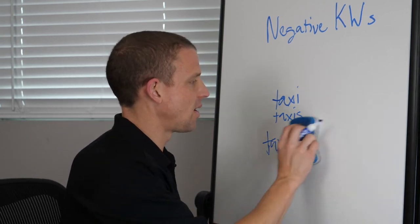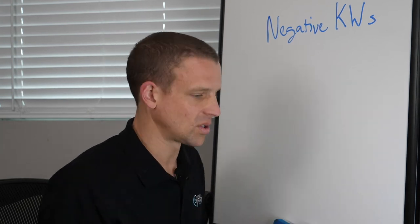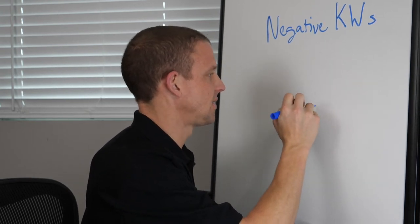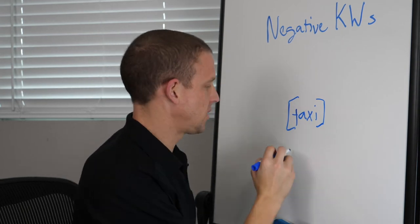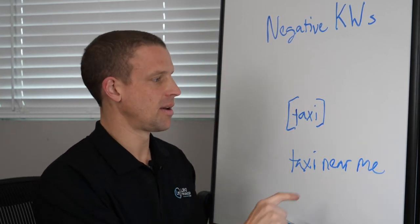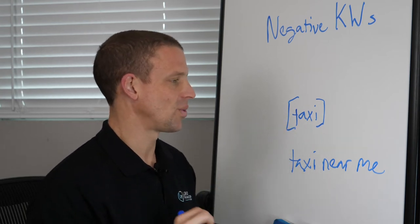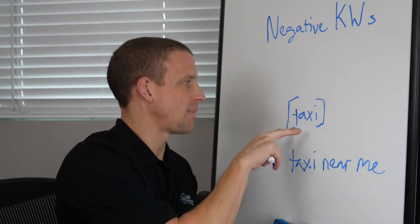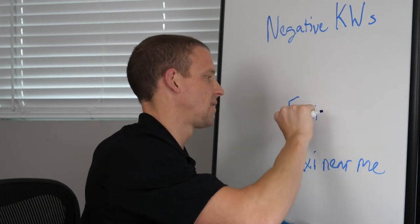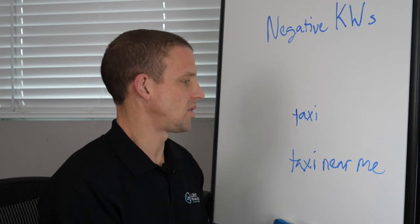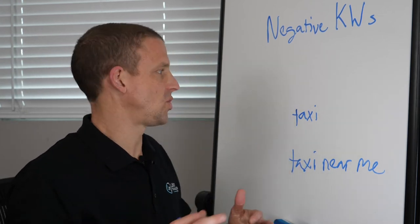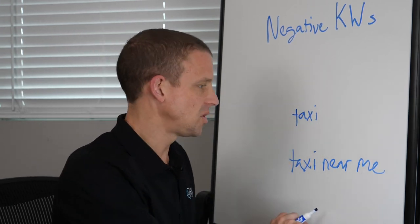That's why it's always important to have lots of different variations. With negative keywords, there's only broad match and exact match. For the most part, I don't use exact match negative keywords — I usually just use broad match. So if 'taxi' is your broad match negative keyword and someone searches 'taxi near me,' your ad won't be shown. Granted, you shouldn't have taxi as a keyword in the first place, but I'm just trying to illustrate a point.